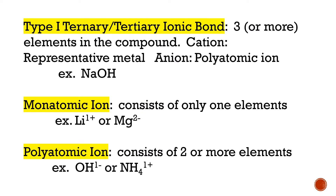Vocabulary — Type 1 ternary, or tertiary, ionic bond. It has three or more elements in the compound; that's why it's called ternary or tertiary — you'll see both words. Its cation is a representative metal from the S group or the P group, and it's positive. Its negative anion is going to be a polyatomic ion, and we'll talk about where to find those in a minute.